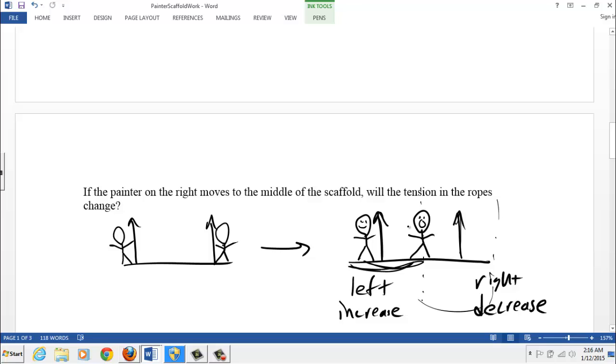And as the painter continues to move over here and after he stops and everything's back at rest, back in equilibrium, if we apply the equilibrium rule, we'll see that more tension will be created on the left rope and less tension on the right.